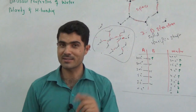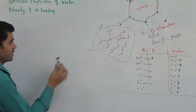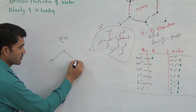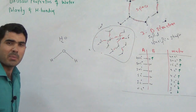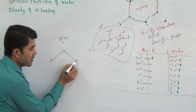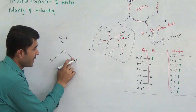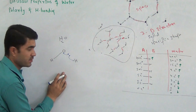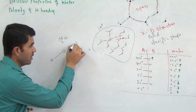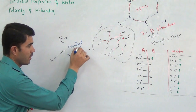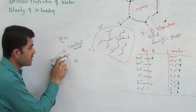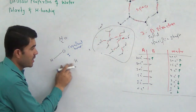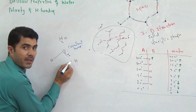A water molecule is written as H₂O — that is, oxygen bonded to two hydrogen atoms. This line represents a bond, and within that bond there are actually two electrons: one from the hydrogen and one from the oxygen. These two electrons are being shared, giving us a covalent bond. The two electron pairs have the tendency to move towards oxygen rather than towards hydrogen.